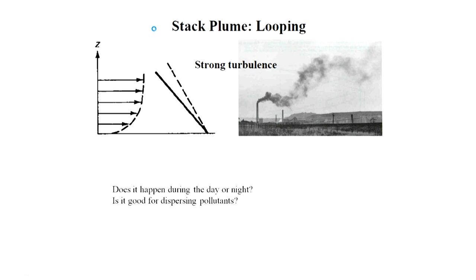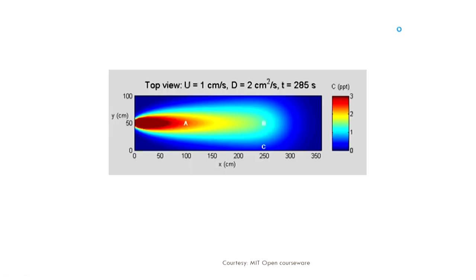Looping — this is the dry adiabatic lapse rate and this is the temperature profile of your atmosphere. At each elevation, your relevant particle of air is hotter than the environment. The hotter packet is going to continue to rise, and that is what you see — it is looping. A typical aspect to keep in mind is that you are going to have diffusion too in the lateral direction. Speed is one centimeter per second and you can see the concentration profiles and how the pollutants are getting dispersed, obviously along the x-direction, but you are also going to have diffusion in the other directions.